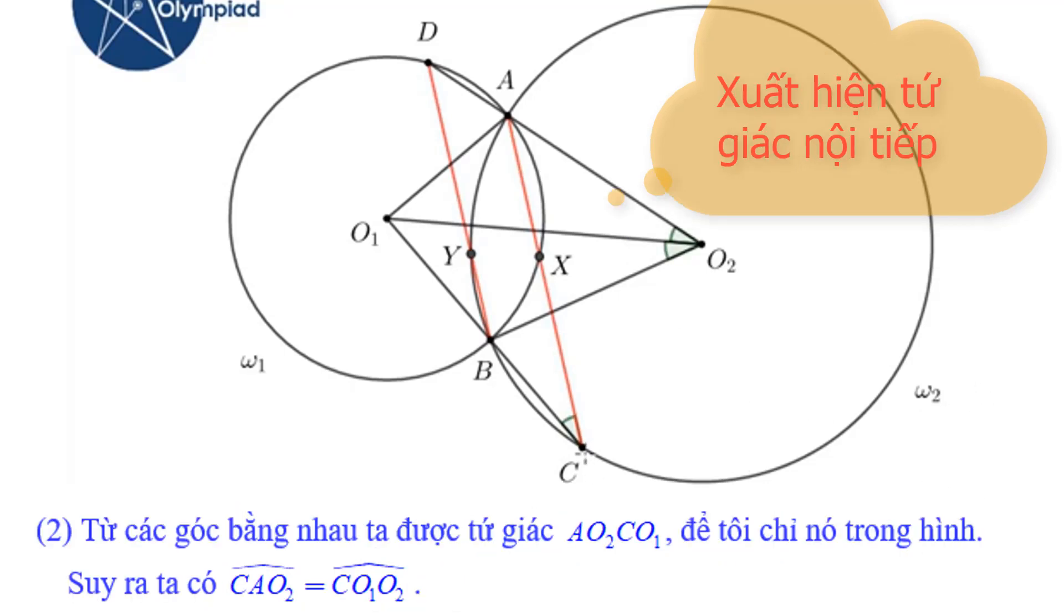Now look at quadrilateral A, O₂, C and O₁. These two angles are equal so this quadrilateral is cyclic. Let me show it in the picture. And this shows these two angles are equal too.